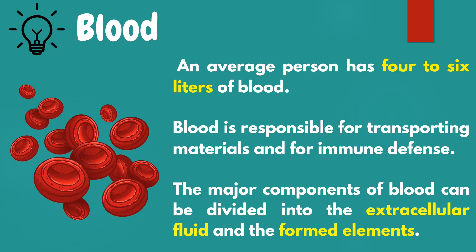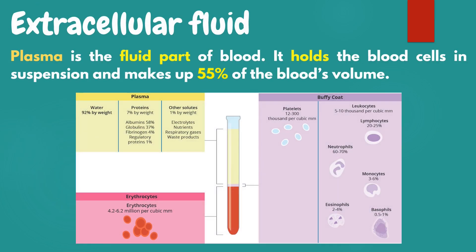Let's discuss the last part of the circulatory system: blood. The blood of an average person has four to six liters of blood. Blood is responsible for transporting materials and for immune defense. The major components of blood can be divided into the extracellular fluid and the formed elements. Plasma is the fluid part of the blood — it holds the blood cells in suspension and makes up 55 percent of the blood's volume.